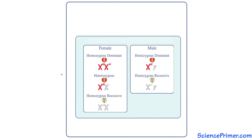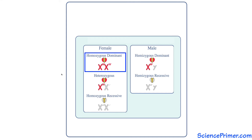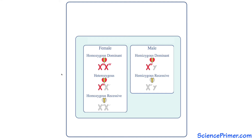In females, the presence of a dominant red encoding allele will produce red eyes, even if the individual is heterozygous for the white allele. Females can be homozygous dominant for the red encoding allele, giving them red eyes; heterozygous, with one of each allele, but exhibiting red eyes; and homozygous recessive, with two white encoding alleles, giving them a phenotype of white eyes.